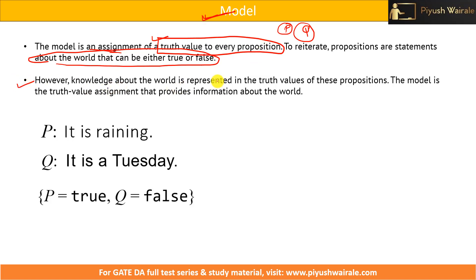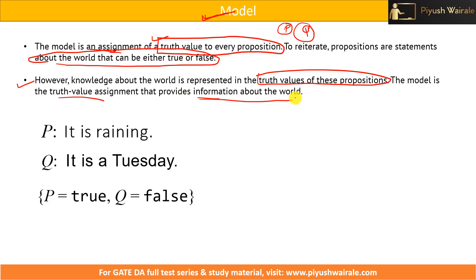Knowledge about the world is represented in the truth values of propositions — yes, by the model. The model is the truth value assignment that provides information about the world.